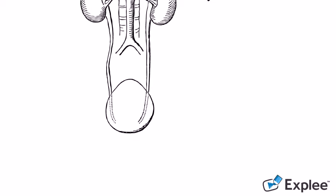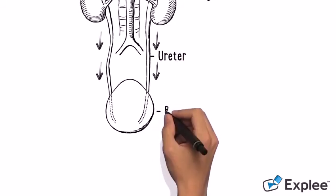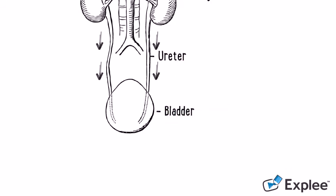Excess fluid and waste becomes urine which travels down two tubes called the ureters to the bladder where it is then flushed out of the body through the urethra.